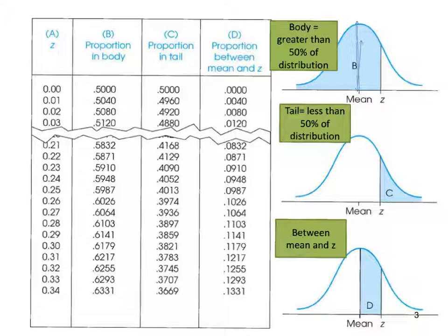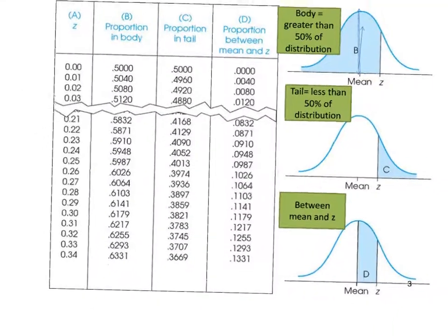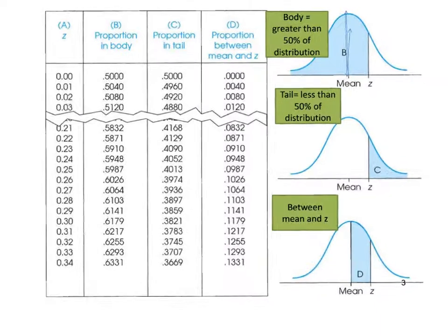The last thing we're going to look at is proportion between mean and z, which is in the D column. That gives us the proportion between our mean of zero and our z value. For example, if z = 0.340, the proportion from zero to z of 0.34 would be 0.1331. Your task is to not only compute z, but also decide whether you're looking for a proportion in the body, a proportion in the tail, or a proportion between mean and z.